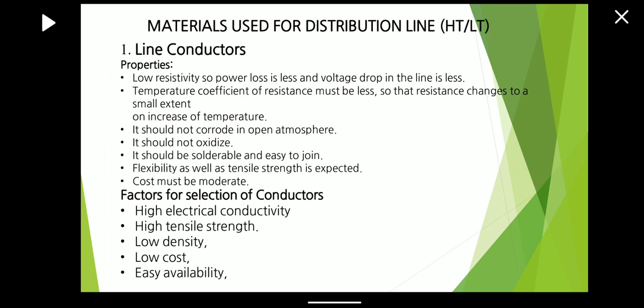What are the properties of the line conductor? First, low resistivity, so the power losses are less and the voltage drop in the line is also less. The temperature coefficient of resistance must be less so that the resistance changes to a small extent on the increase of temperature. It should not corrode in the open atmosphere, it should not oxidize, and it should be solderable and easy to join.